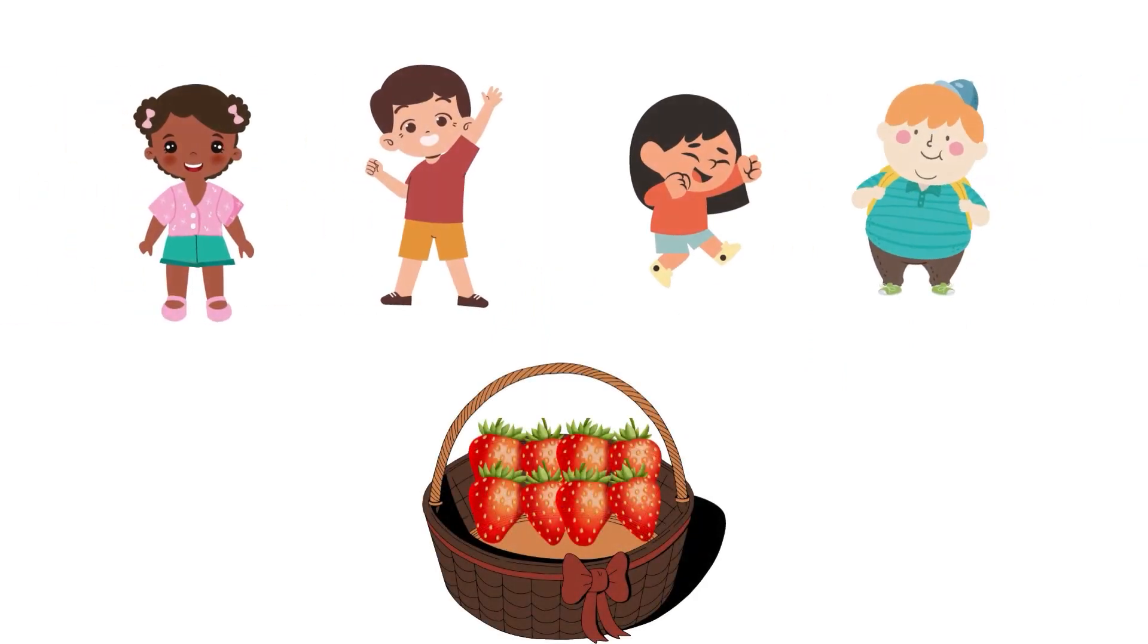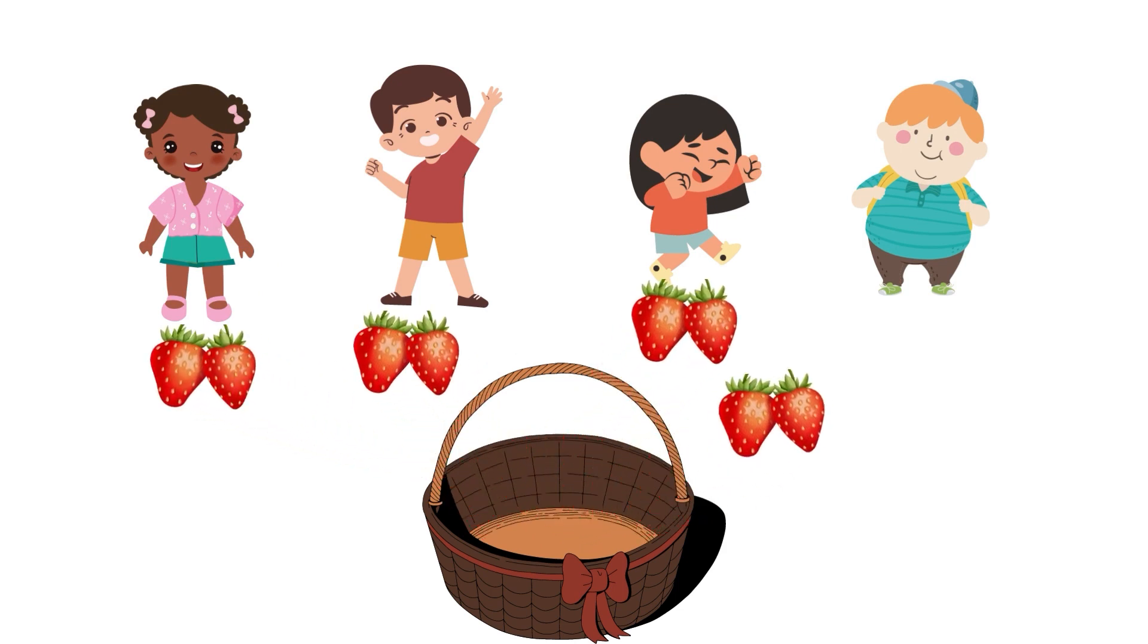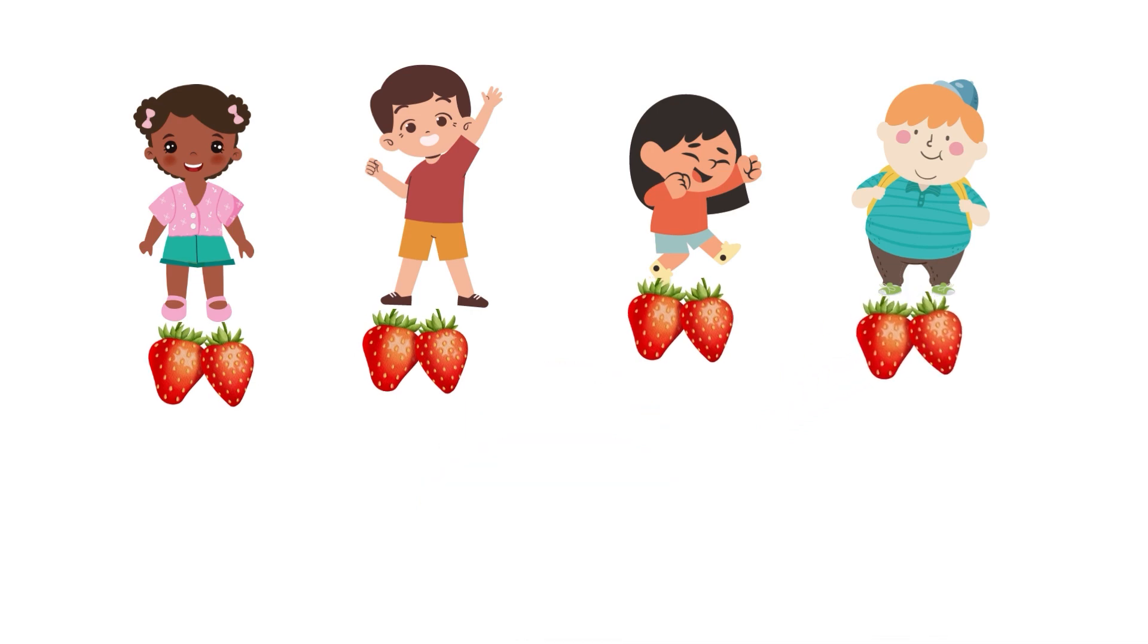Another example. If you have eight strawberries and you share them with four friends, how many strawberries does each friend get? Yes. Eight divided by four equals two strawberries.